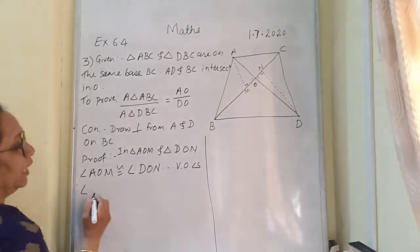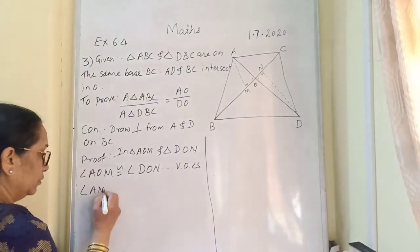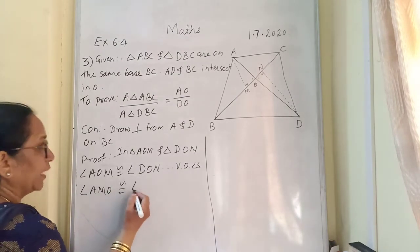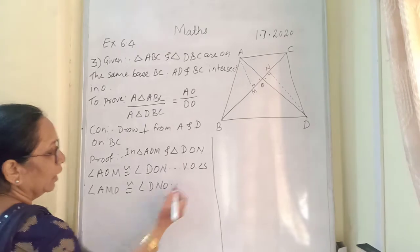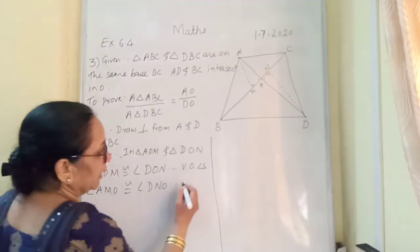Then angle AMO is congruent with angle DNO. And reason will be each 90 degrees.